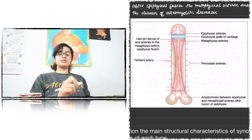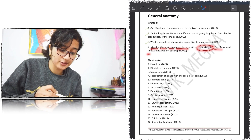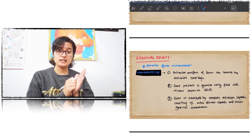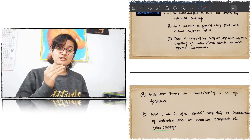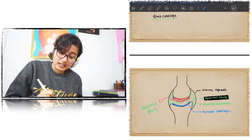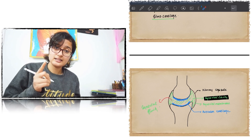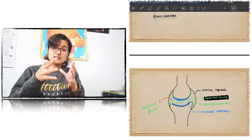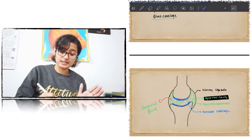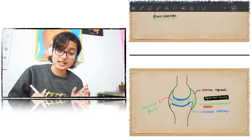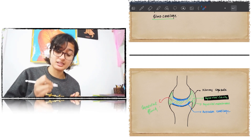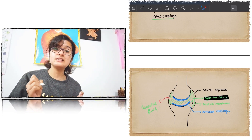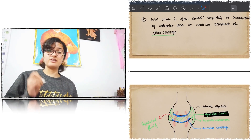The next question: 'Mention the main structural characteristics of synovial joint and classify synovial joints with examples.' Synovial joints permit free movement. Their characteristics are: articular surfaces of the bones are covered by articular cartilage; there is an articular capsule with an outer fibrous layer and inner synovial membrane enclosing the two bones; the synovial membrane forms a synovial cavity filled with synovial fluid; the joint cavity may be partially or completely divided into two compartments by a fibrocartilaginous articular disc; and the bones are connected by ligaments.